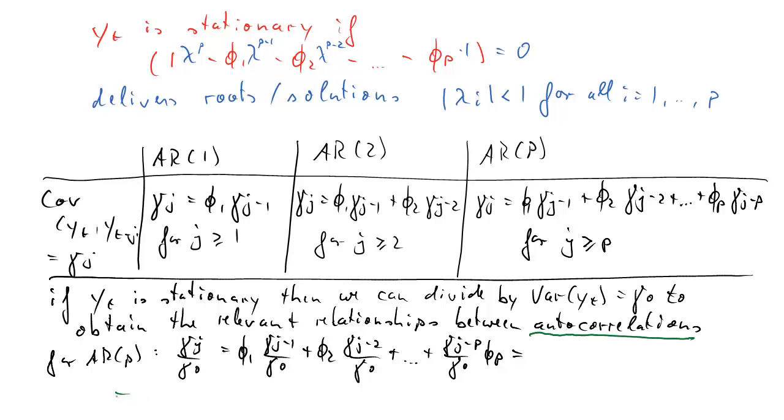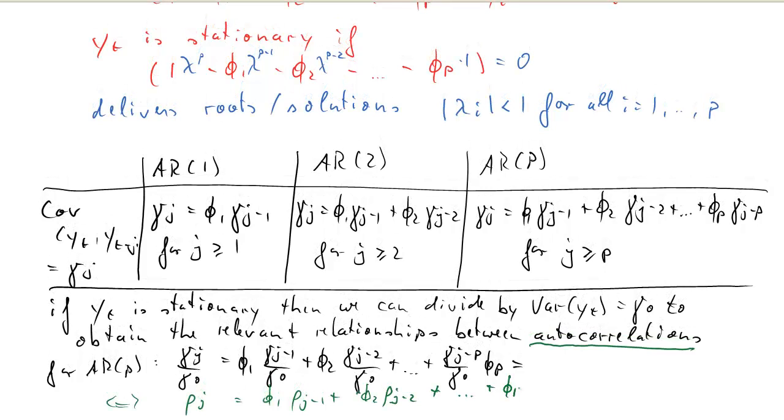And we'll label these with rho. Okay, autocorrelations will be labeled with rho. So here we have rho_j is equal to phi_1 times rho_{j-1} plus phi_2 rho_{j-2}, all the way up to phi_p times rho_{j-p}. So let's say, fifth-order autocorrelation is related to previous order, to the fourth order, third order, and so forth, all the way p lags back.